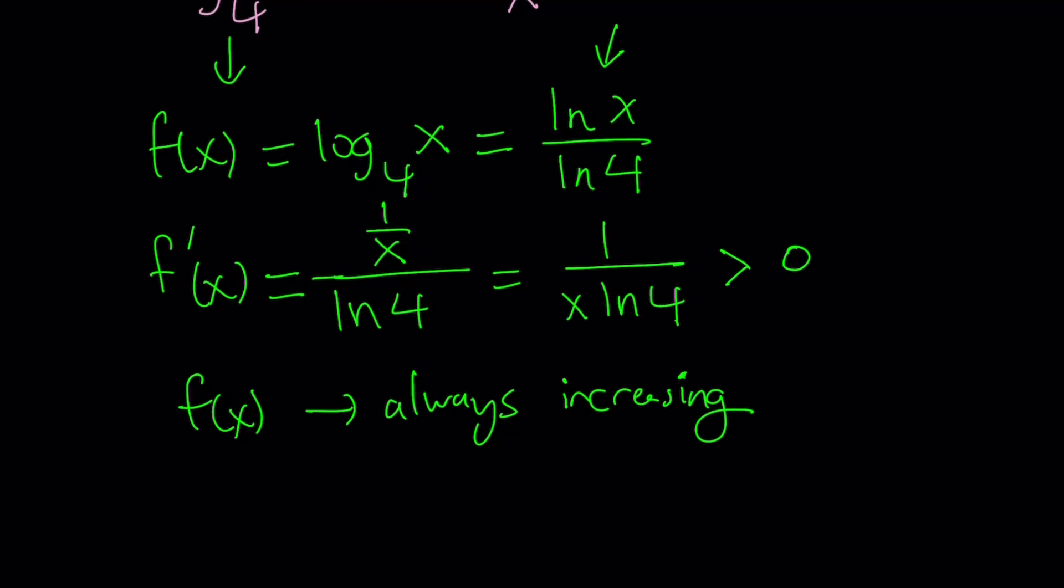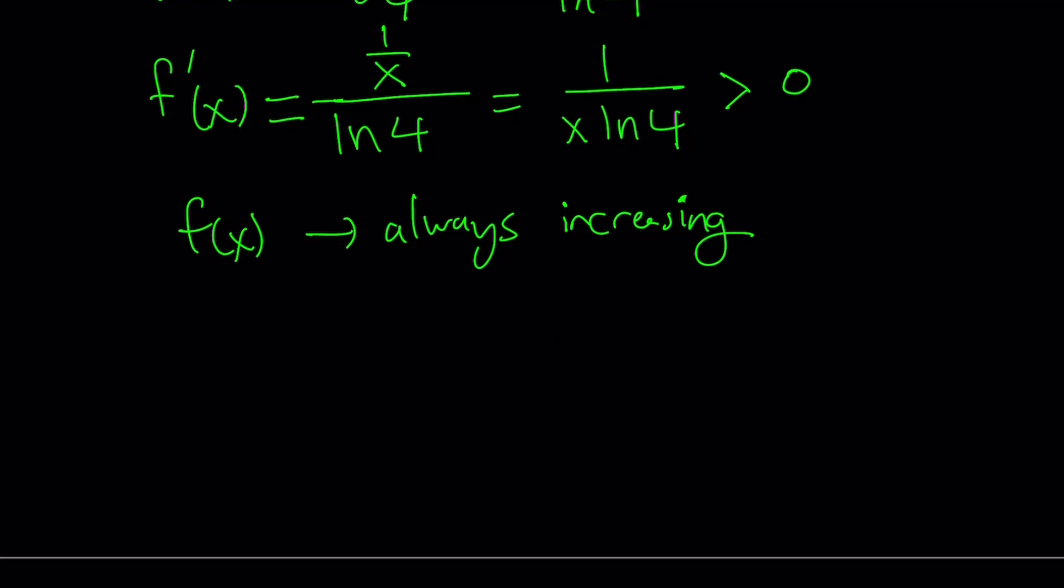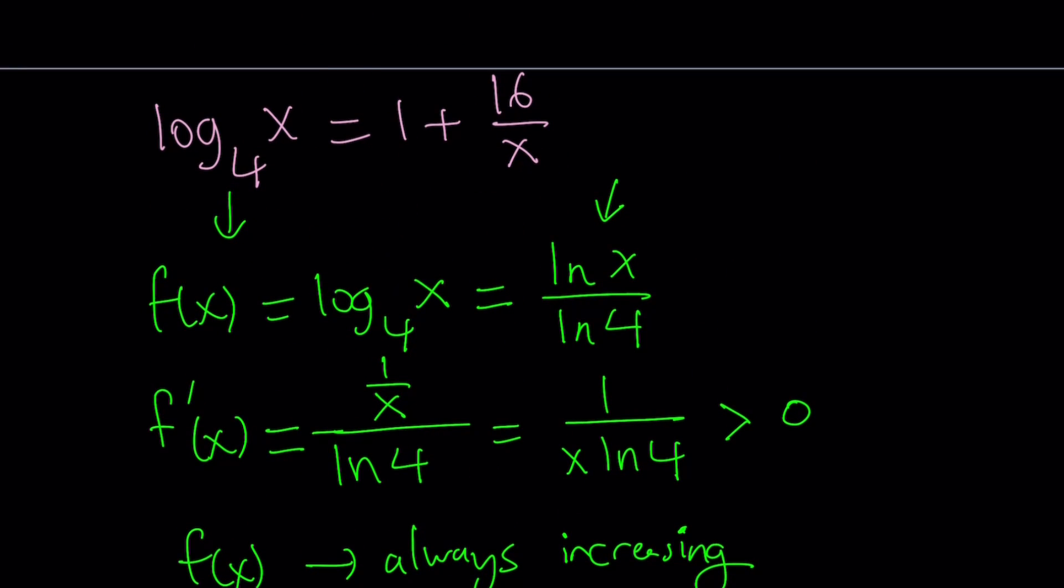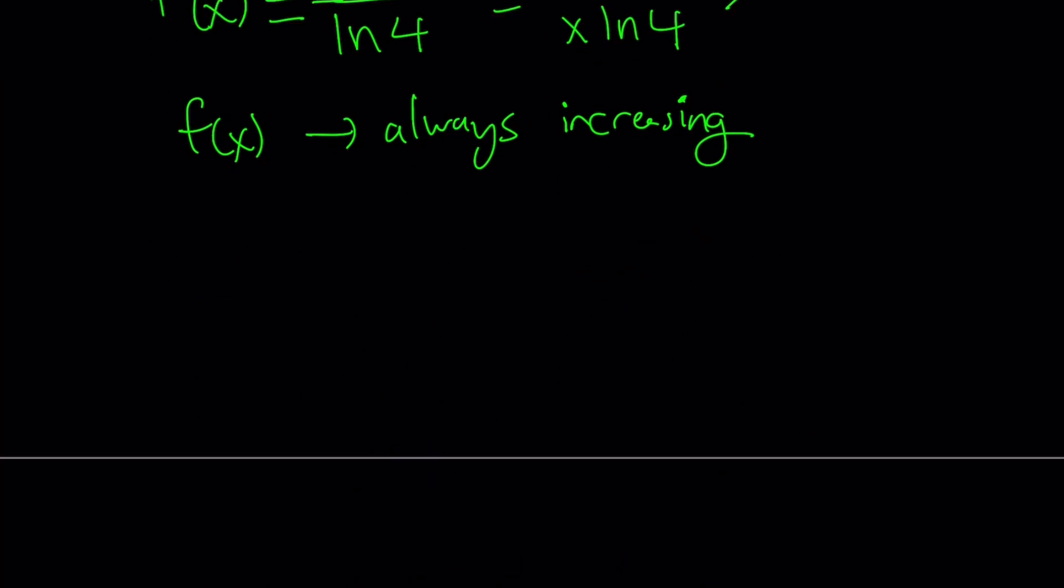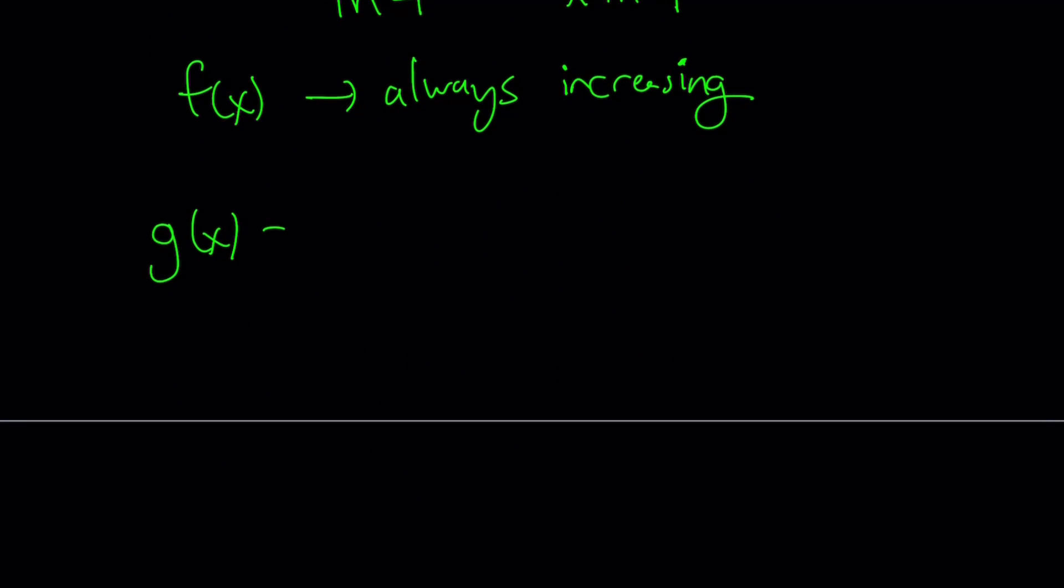Let's take a look at the second piece. We have this function right here, 1 plus 16 over x. Let's call that g of x. And from here, we notice that this is a hyperbola. Let's differentiate it. And this hyperbola is only defined for all reals besides 0. So you have to subtract 0 because x cannot be 0, but otherwise it's well-defined.